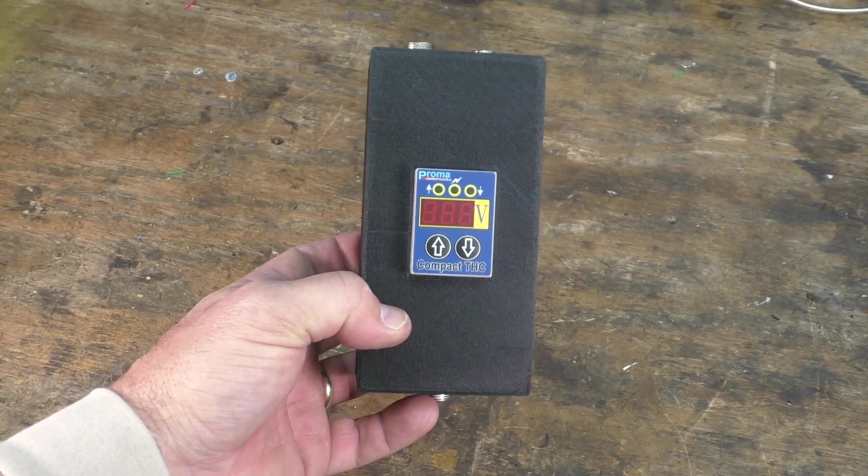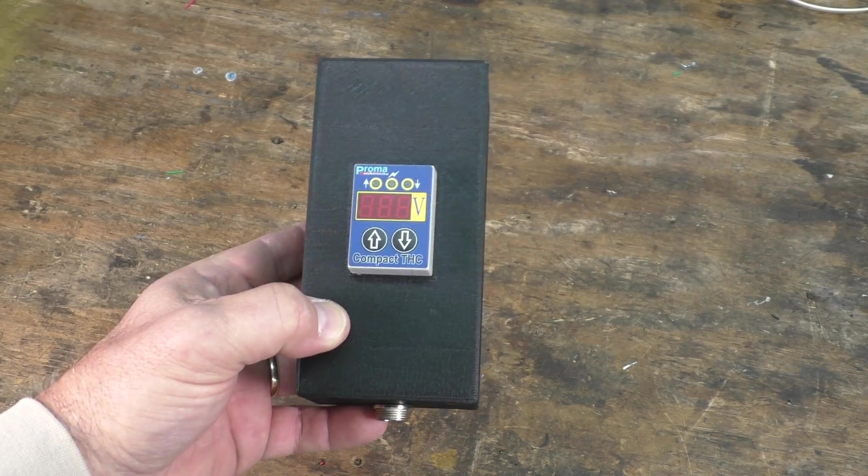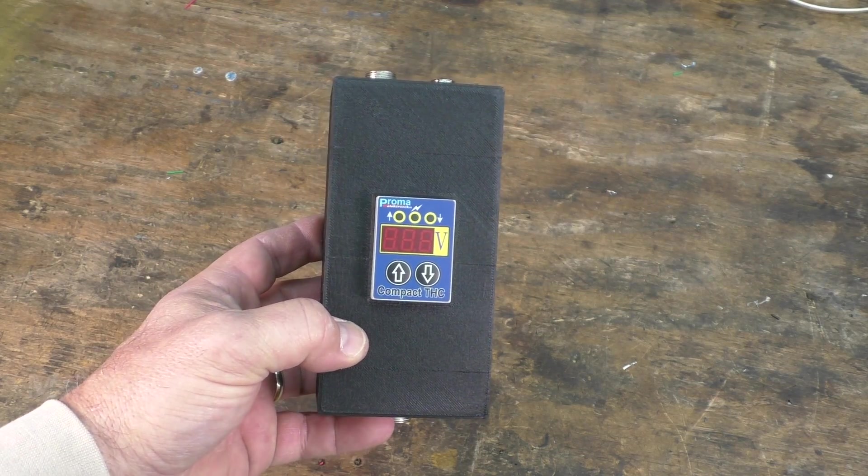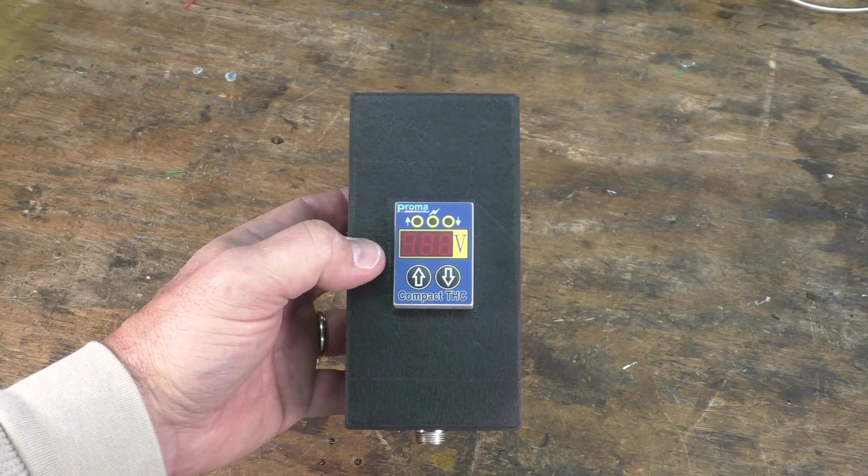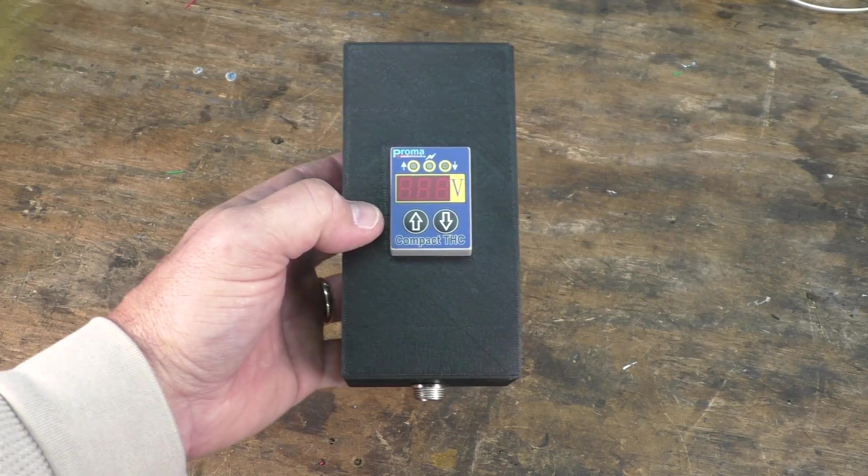Also, I'd like to mention on that Harbor Freight plasma cutter, I had the torch height controller mounted to the side of the plasma cutter, and that was because I was using the direct arc voltage for the torch height controller.